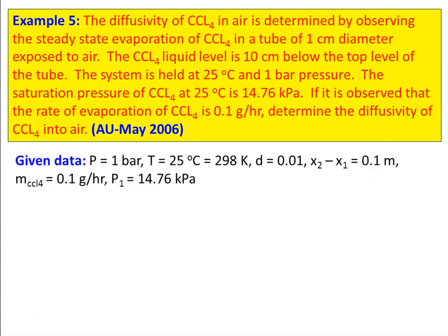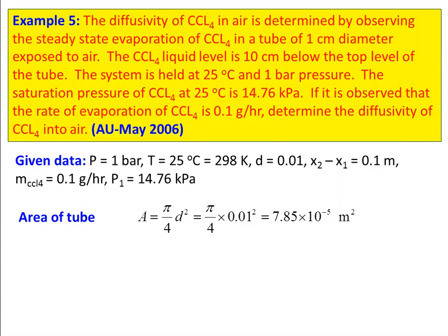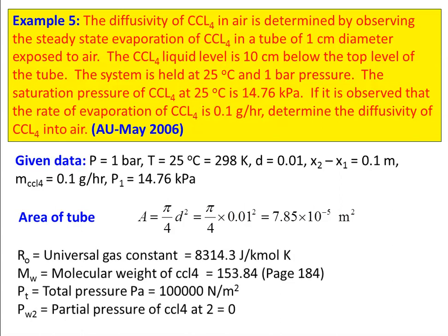Given: total pressure is 1 bar, temperature is 25 degree Celsius, 298 Kelvin, diameter is 0.01 meter, x2 minus x1 equal to 0.1 meter, that is 10 centimeter below. Mass of CCl4 equal to 0.1 grams per hour. Partial pressure PW1 equal to 14.76 kilopascal. Area of the tube equal to pi by 4 d square, which is pi by 4 into 0.01 square equal to 7.85 into 10 power minus 5 meter square. Universal gas constant is 8314.3 joules per kilogram mol Kelvin. Molecular weight of CCl4 equal to 153.84. Total pressure is 1 bar, which is 10 power 5 Newtons per meter square. Partial pressure of CCl4 at location 2 equals 0.